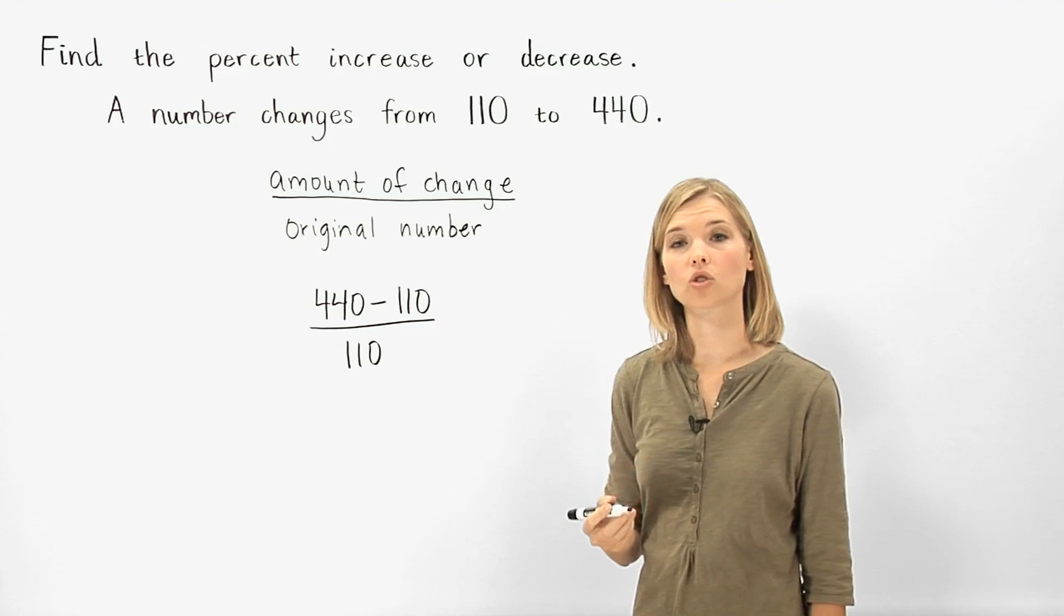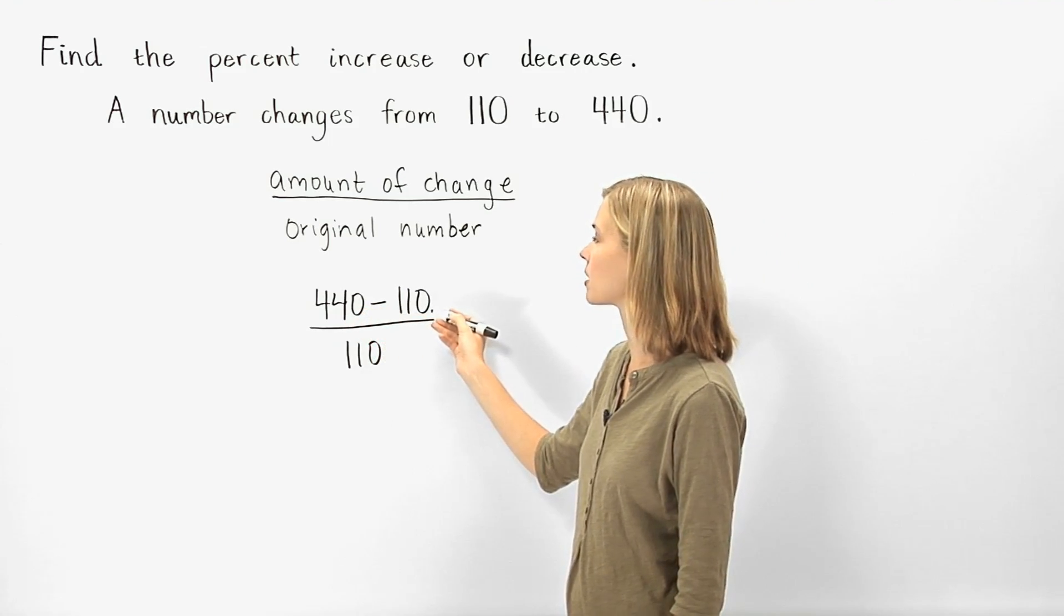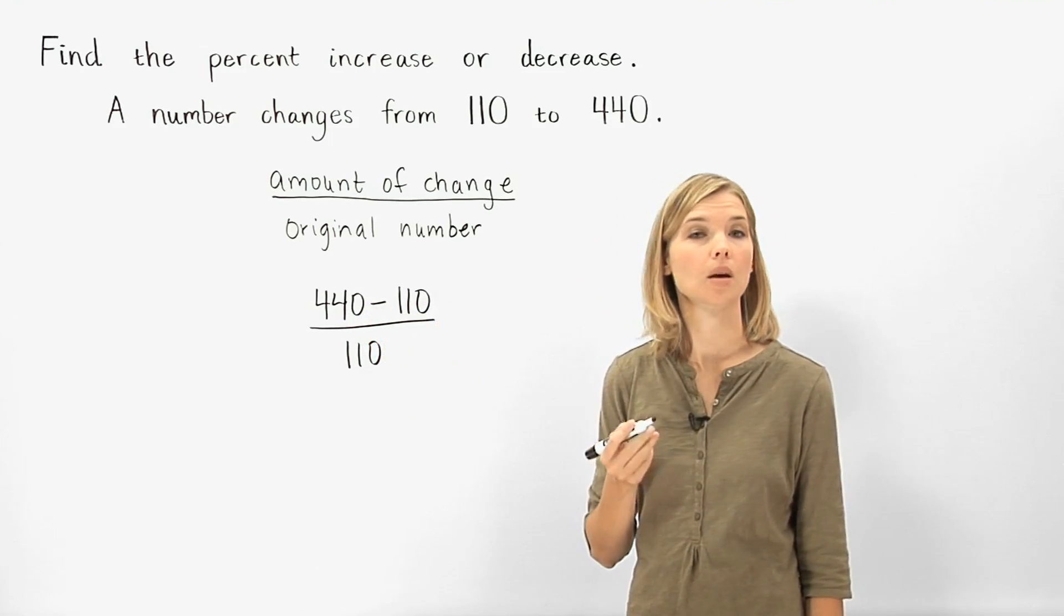Notice that when finding the amount of change, we always take the larger number minus the smaller number, so that the amount of change ends up positive.